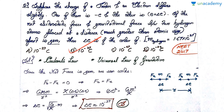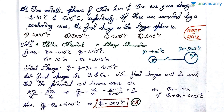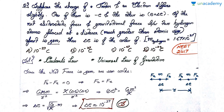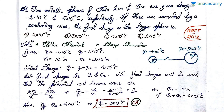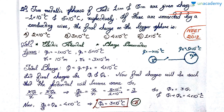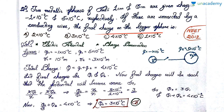So option B is the correct answer. Moving on to the next question — while the previous one was about Coulomb's law, this one is more about electric potential. It's given that two metallic spheres of radius 1 centimeter and 3 centimeters are given charges of minus 1 times 10 to the minus 2 coulombs and 5 times 10 to the minus 2 coulombs respectively. If these are connected by a conducting wire, the final charge on the bigger sphere is what?